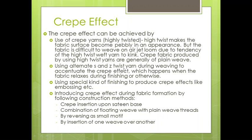Another method is using alternate S and Z twist yarn during weaving to accentuate the crepe effect. During fabric formation, we use S twist yarn, then Z twist yarn, then S twist yarn, and so on alternately. After fabric formation, when the fabric relaxes during finishing processes or otherwise, this crepe effect becomes prominent, giving an irregular appearance.